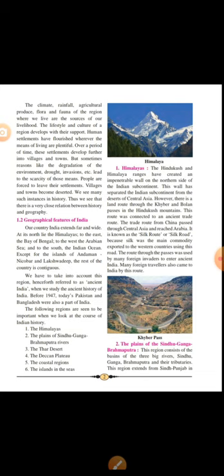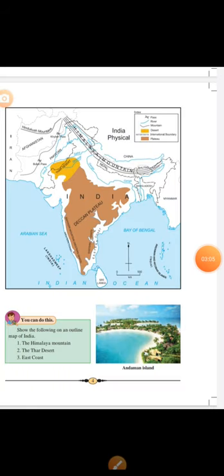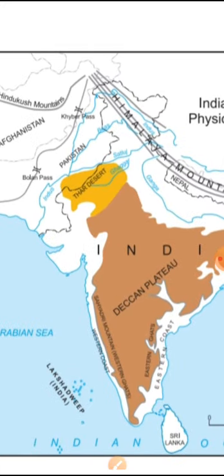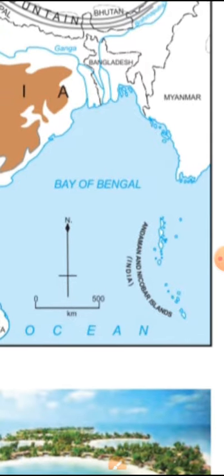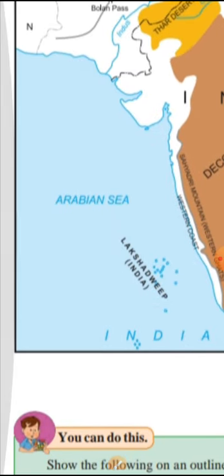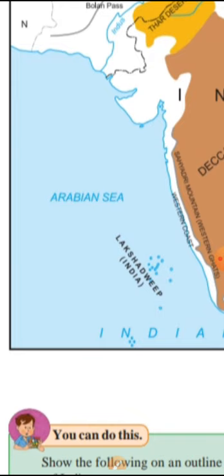Section 5.1.2 covers the geographical features of India. India is a large country having the Himalayas towards the north. There is the Hindukush Mountain range, Afghanistan, Pakistan, Bolan Pass, and Khyber Pass. To the east is the Bay of Bengal, to the west is the Arabian Sea, and to the south is the Indian Ocean.